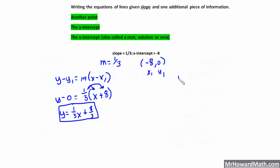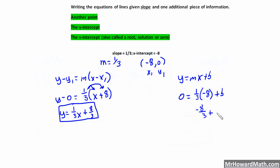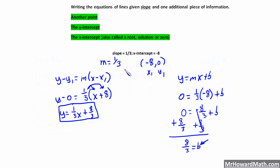Now using y equals mx plus b: y is 0, m is 1 third, x is negative 8. So 0 equals 1 third times negative 8 plus b, which gives negative 8 thirds plus b. Adding 8 thirds to both sides gives b equals 8 thirds. With b and m known, we write y equals 1 third x plus 8 thirds — the same answer either way.